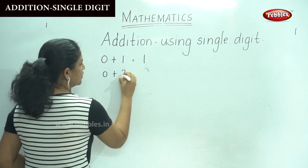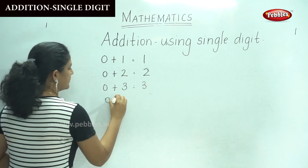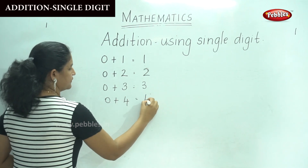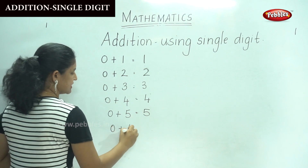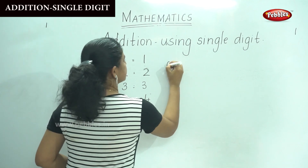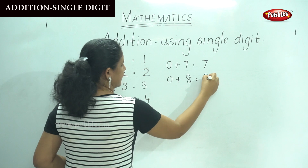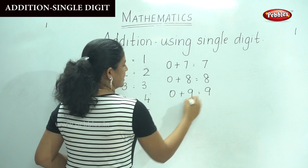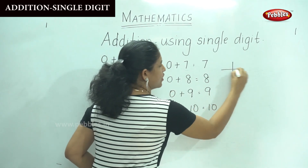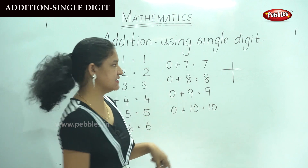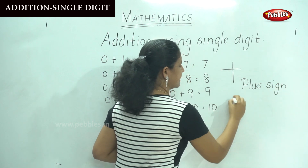So 0 plus 2 will give you 2. 0 plus 3 will give you 3. 0 plus 4 will give you 4. 0 plus 5 gives you number 5. 0 plus 6 is number 6. 0 plus 7 is number 7. 0 plus 8 will give you number 8. 0 plus 9 is number 9. And 0 plus 10 will give you 10. This is called the plus sign or the addition symbol.